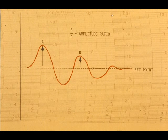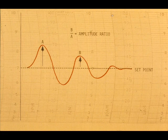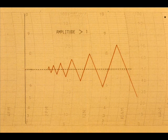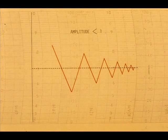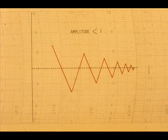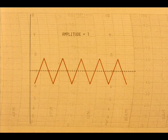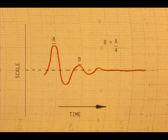The ratio of the magnitude of one cycle to the preceding one is called the amplitude ratio of the curve. Tuning adjustments can make the amplitude ratio greater than one, less than one, equal to one, or the optimum for the given process.